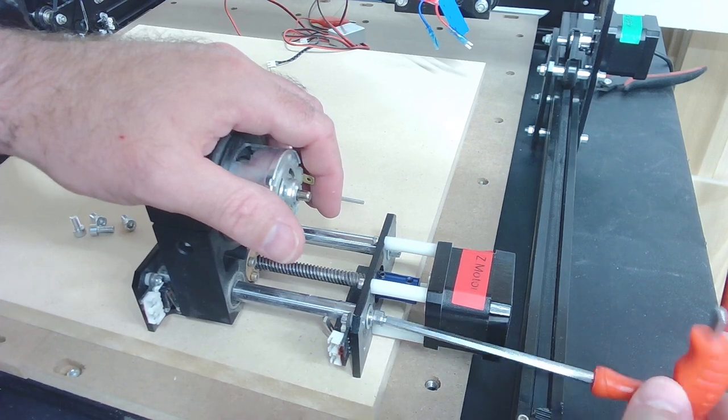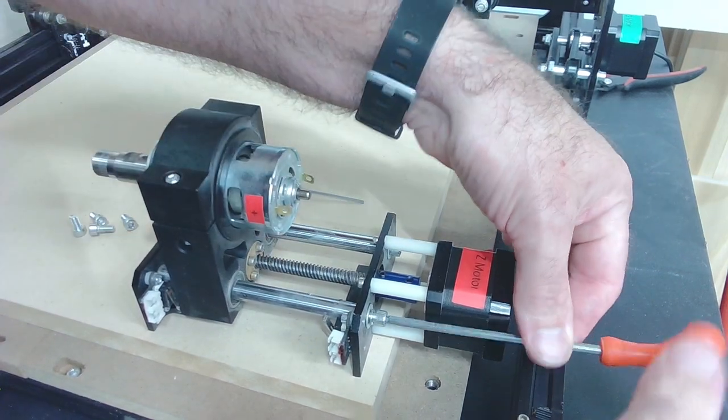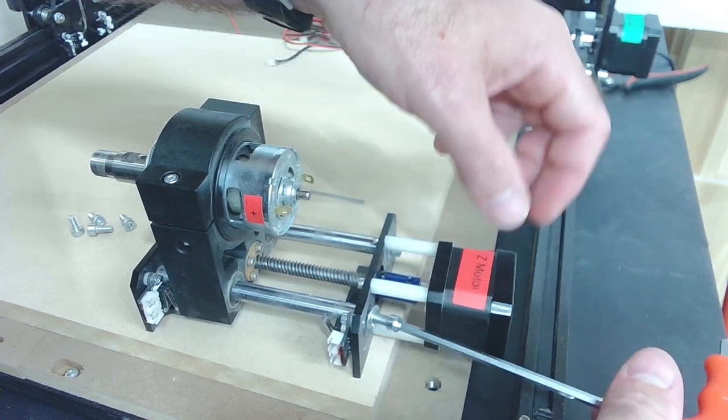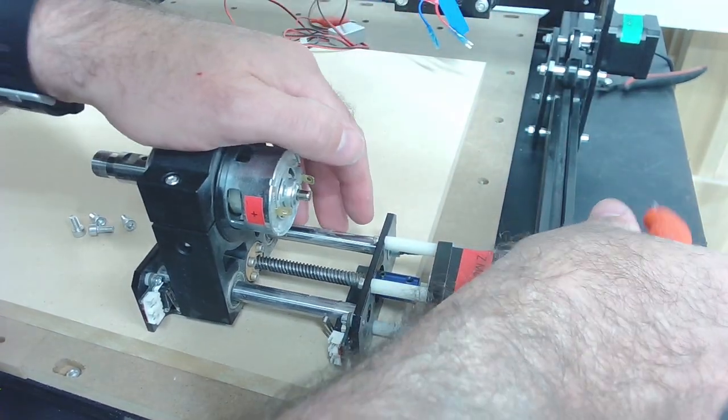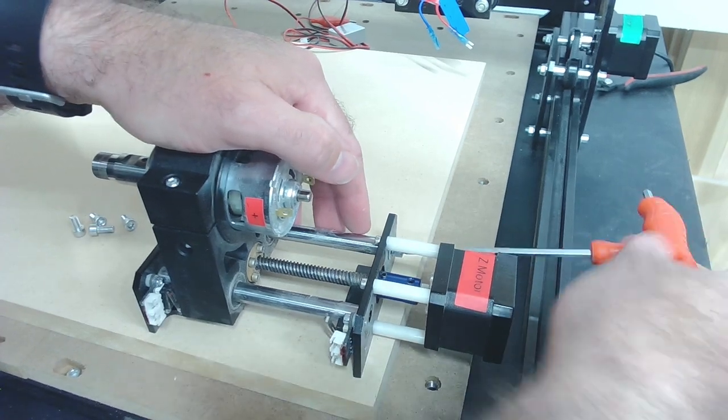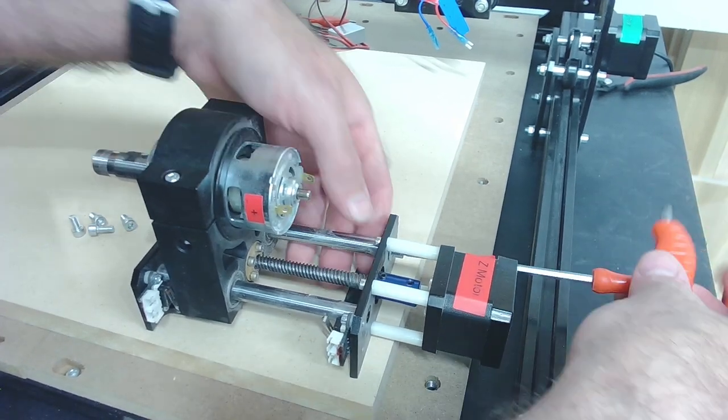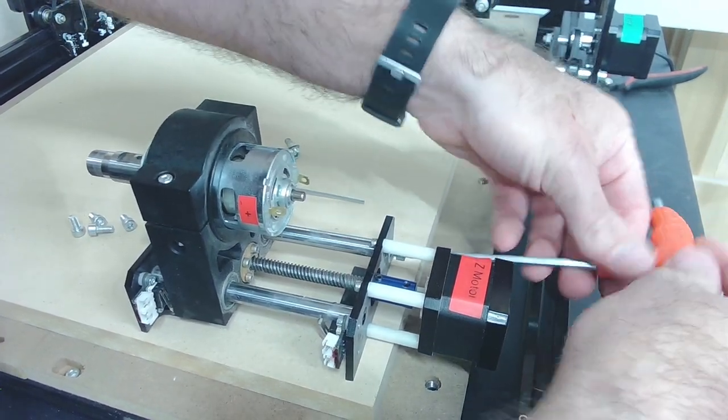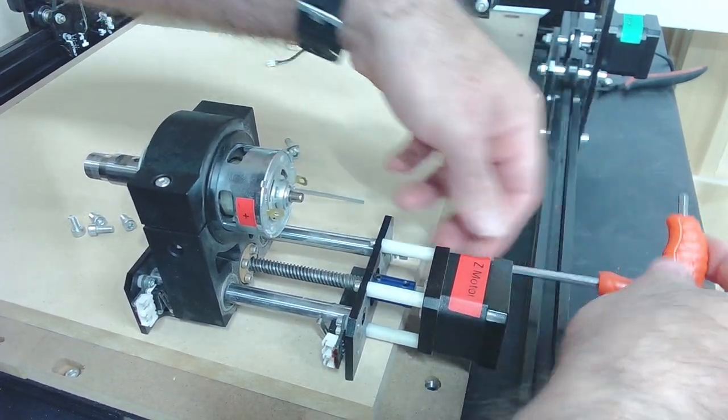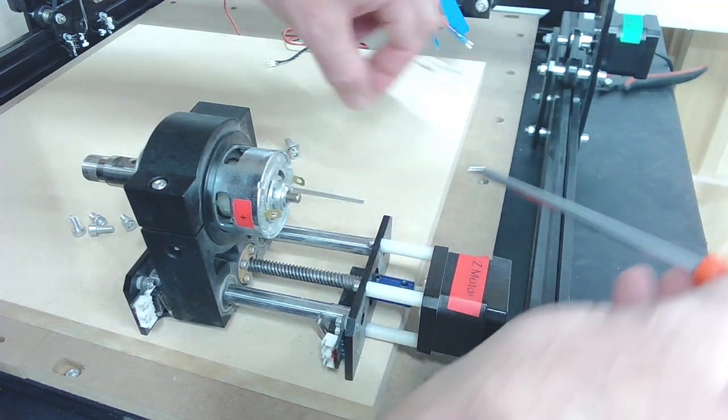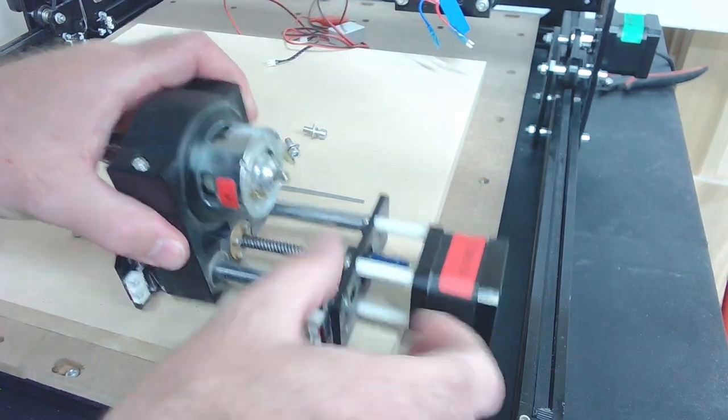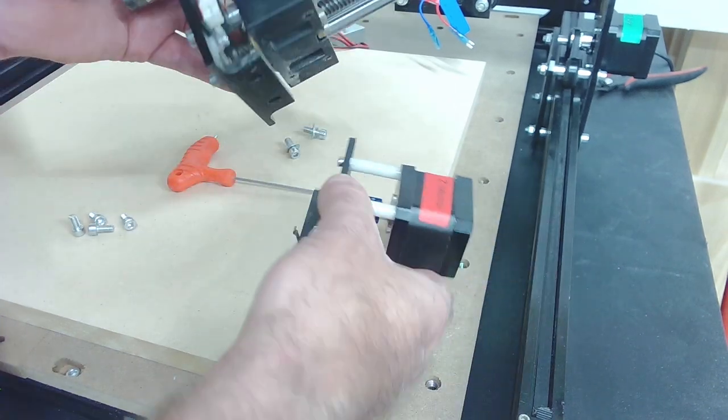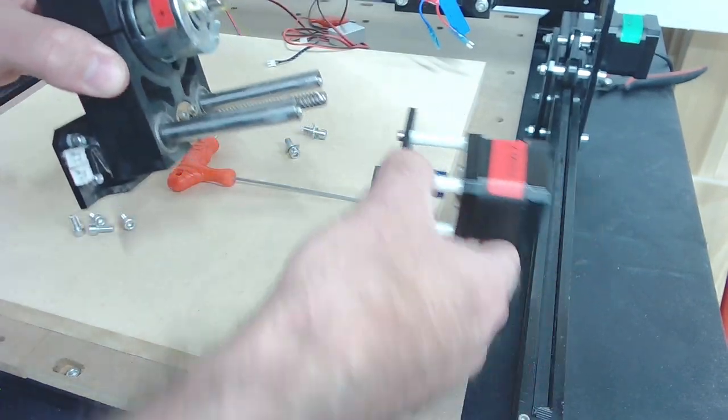Next I'm going to remove these screws for the linear rods here. Once these are off, the axis kind of just falls apart. Make sure you don't lose the screws or the lock washers. With the two set screws loosened and those other two screws taken out, we can disassemble the Z axis just like that.